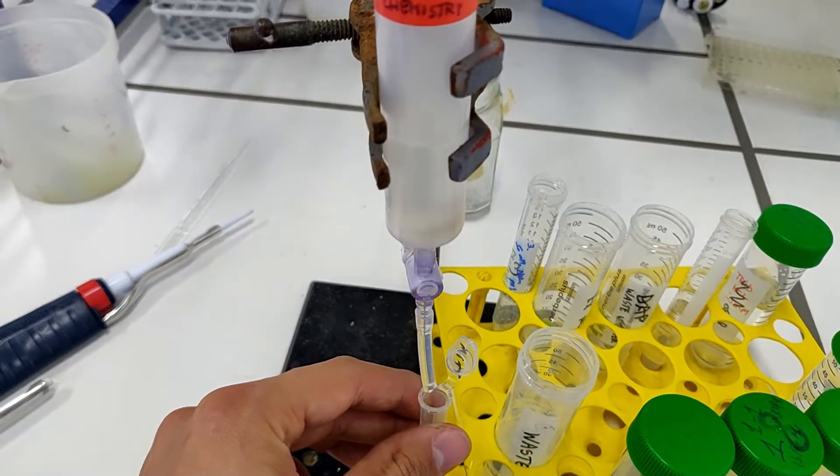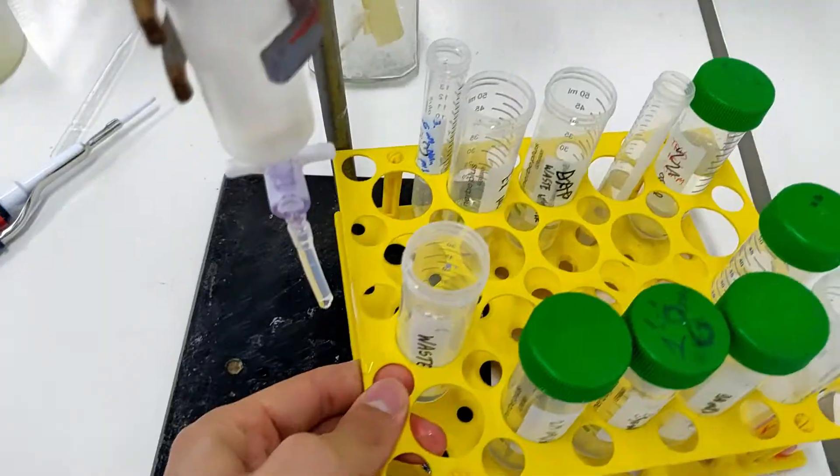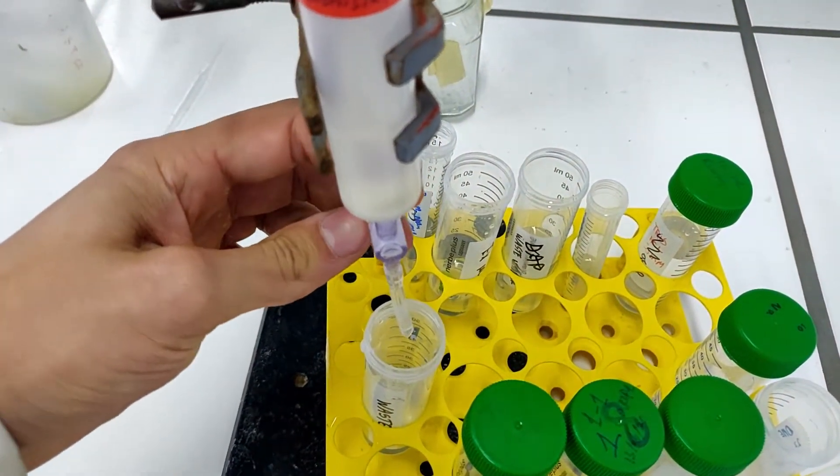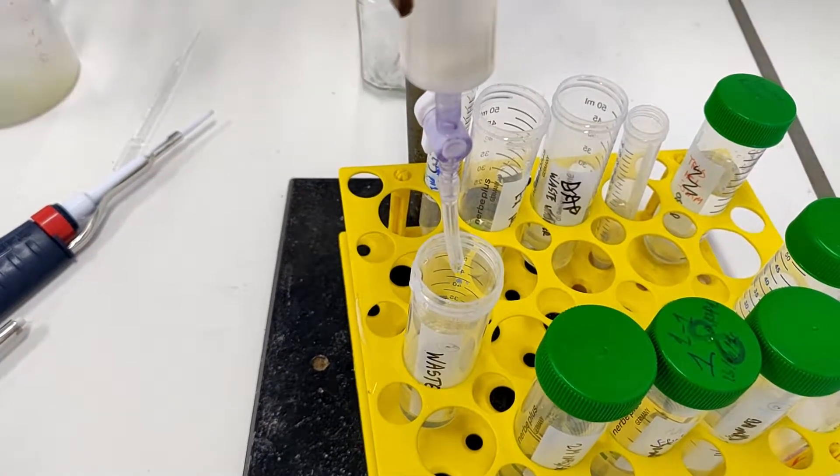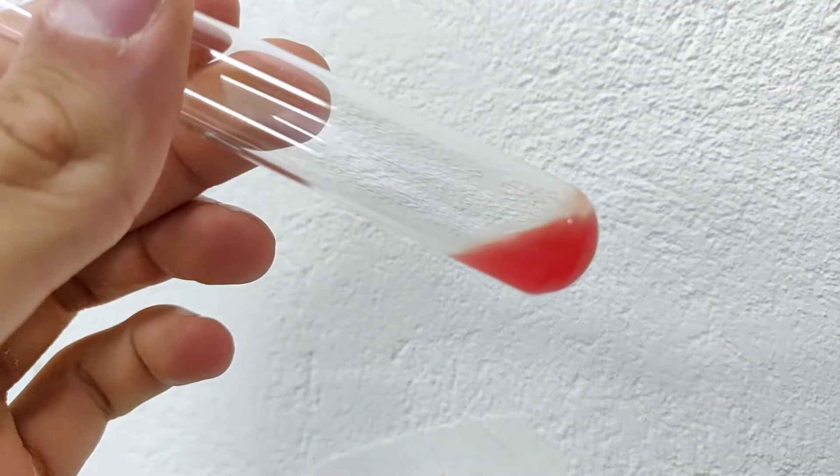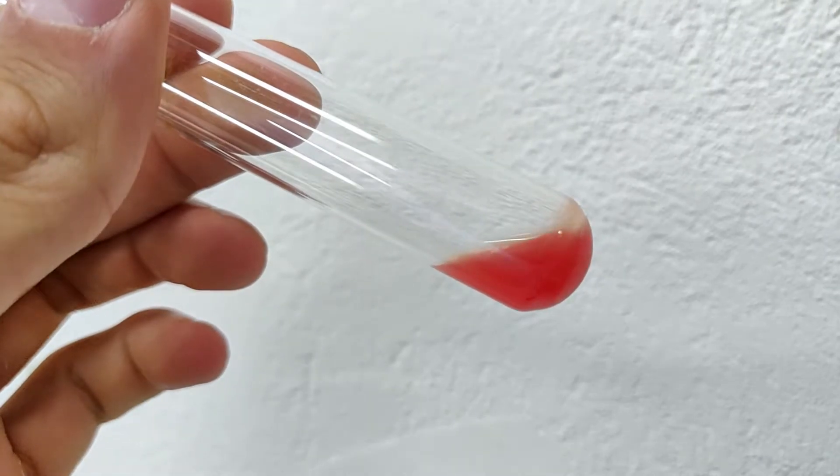In this video, I was able to separate a lectin, which is a carbohydrate binding protein, from a crude protein mixture. I was able to do this with a specific affinity chromatography column, and I was able to test if this was successful on rabbit blood. More on this later.